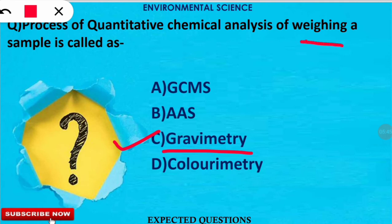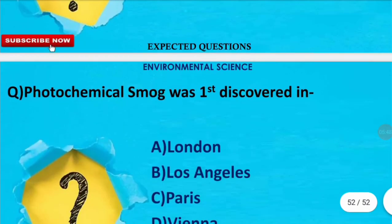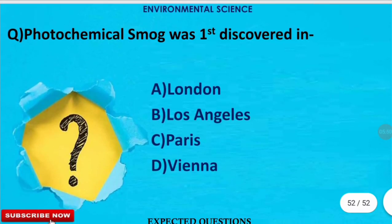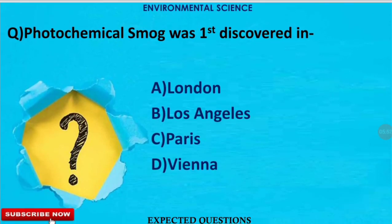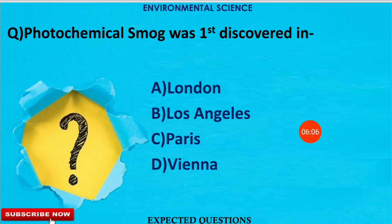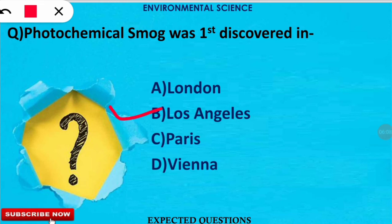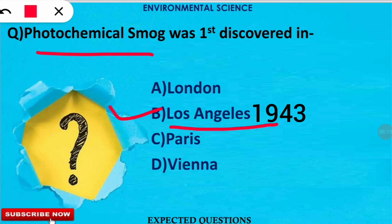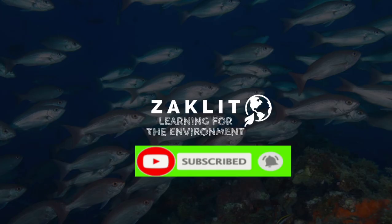This question is related to photochemical smog: in which city was photochemical smog first discovered? The correct option is B — Los Angeles. In the year 1943, photochemical smog was first discovered in the city of Los Angeles.